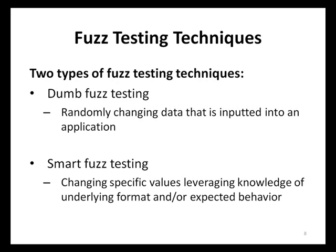The other fuzz testing technique is called smart fuzzing. Rather than inputting completely random data, smart fuzz testing consists of inputting specific values leveraging knowledge of the underlying format and expected behavior within an application. Fuzz testing tools that work in this fashion are able to create malformed data that will more likely be accepted and parsed by an application. The smart fuzz testing technique will greatly improve the chances of identifying security vulnerabilities compared to dumb fuzz testing. Both dumb and smart fuzzing can be very effective in certain situations, and application development teams should employ both techniques.